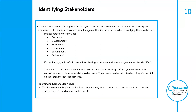Project stages of life include concept, development, production, operations, sustainment, and retirement. For each stage, a list of all stakeholders having an interest in the future system must be identified.